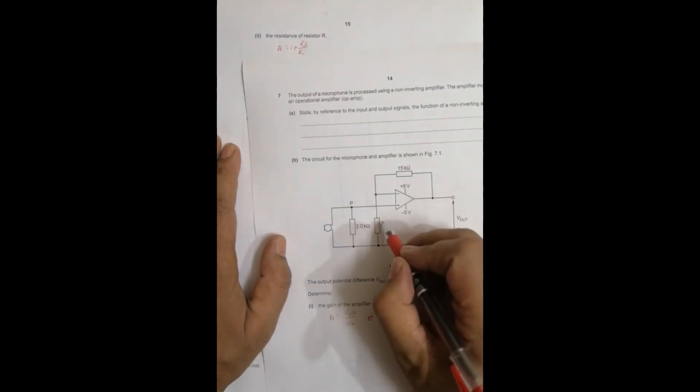So here, Rf is this 15 kilo ohm. This is Rf and this R1 is equal to R.